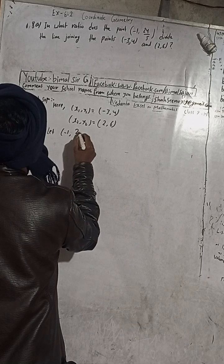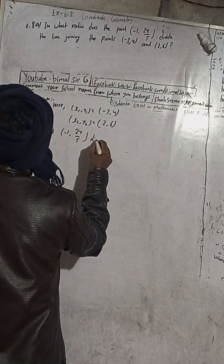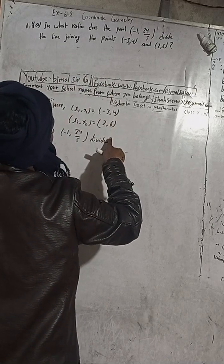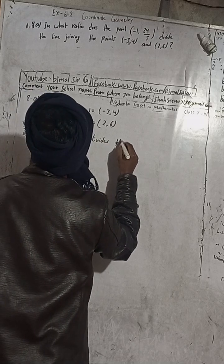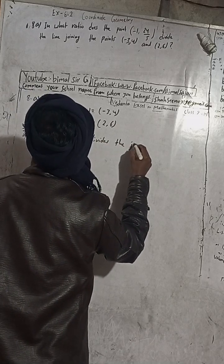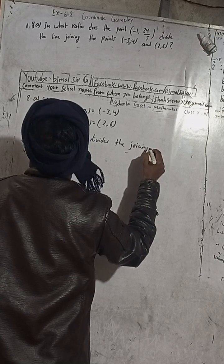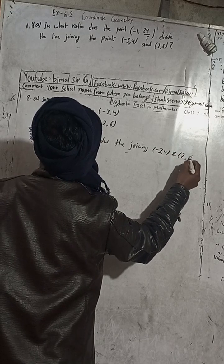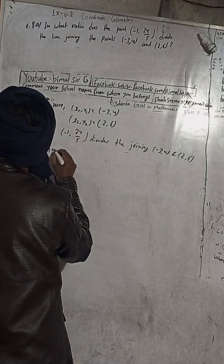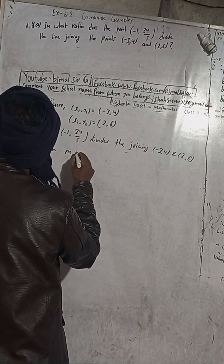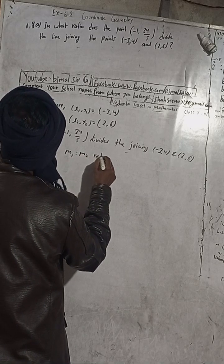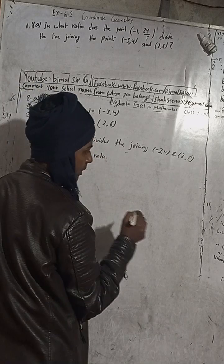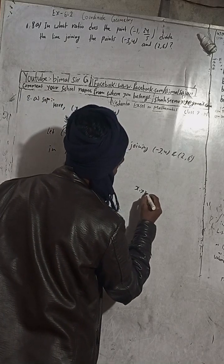Let the point (-1, 24/5) divide the line joining (-3, 4) and (2, 6). We have to find the ratio. By formula, x is equal to...